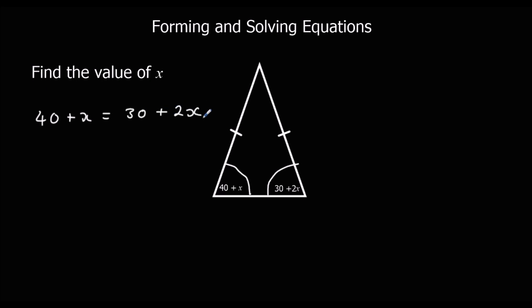Now we have to solve. We get rid of the smallest x first. In this case, we've got 1x here, so we're going to take x away from both sides of the equation. That leaves us with 40 on the left side,